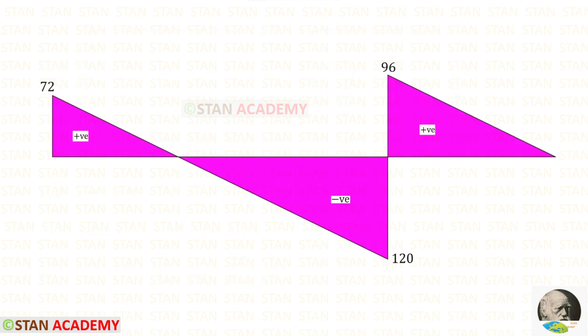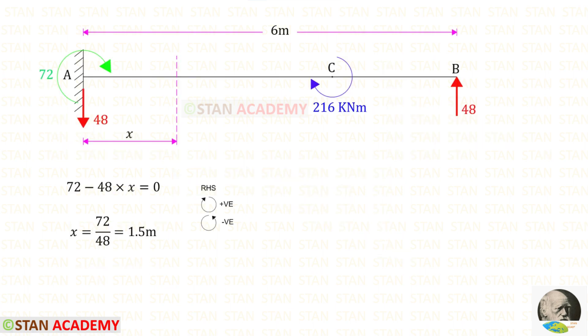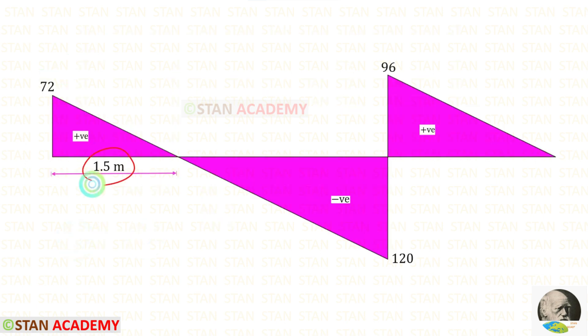Here you can see the bending moment diagram. At one point the bending moment becomes 0. We can make a section at that point and find the distance. I have made a section at a distance of x from point A. Since the moment is 0 at that section, using that condition we can find x, which is 1.5 m. Thank you for watching this video.